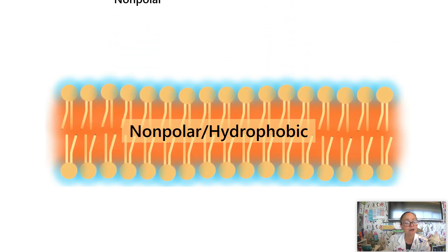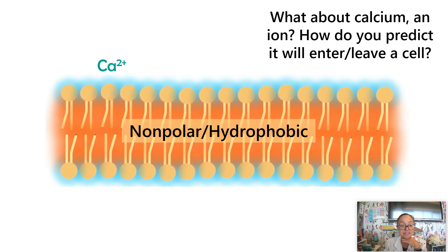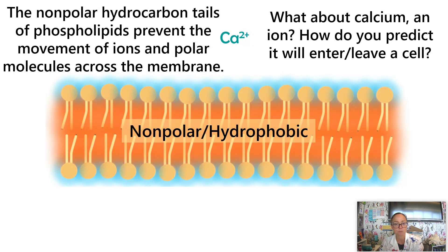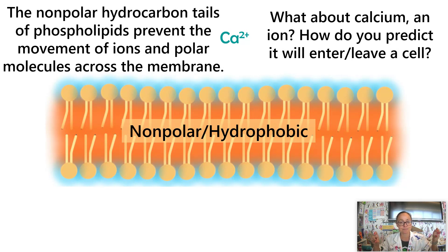When we think about ions — our cells are surrounded in a sea of ions — a charged molecule like calcium is actually repelled by the fatty acid tails and cannot cross through by simple diffusion. Nonpolar molecules can diffuse directly through the membrane, whereas ions and polar molecules are prevented due to those hydrocarbon tails of the fatty acids. The nonpolar hydrocarbon tails of phospholipids prevent the movement of ions and polar molecules across the membrane.